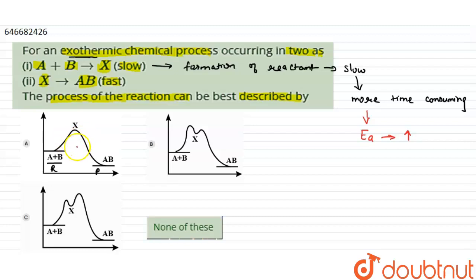In option A, there is only one peak, but there must be two peaks formed because first step is slow step and second is fast. So you can eliminate option A. Now in second option, the first peak is higher.